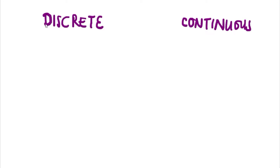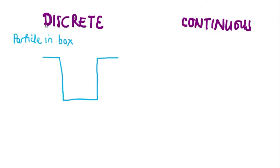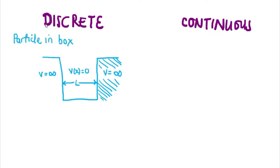First, looking at the discrete energy level — in terms of particle positioning, the particle in a box experiences the discrete energy level. Here we have a box where the walls are non-penetrating. The walls have a potential energy of infinity on both sides, while inside the box over distance l, the potential energy equals zero. In this case, we have discrete energies that are specific to each level or state, starting from n=0, n=1, n=2, and so on.